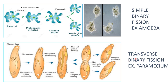Transverse binary fission is seen in paramecium. The division axis is transverse. In paramecium, the parent cell has two nuclei — the macronucleus and the micronucleus. The macronucleus divides amitotically and the micronucleus divides mitotically to form two daughter paramecia.